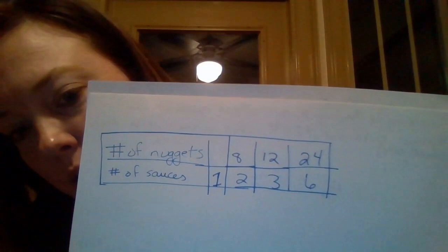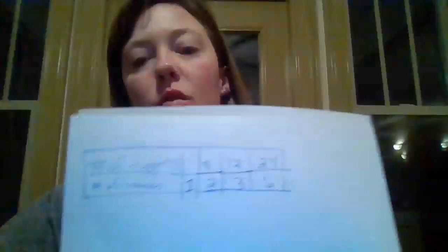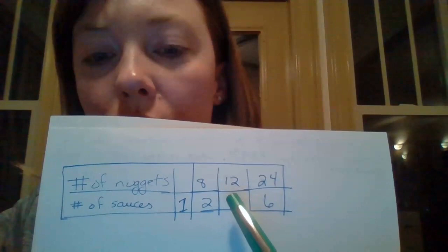One more way you may see unit rates is in a ratio table, which we talked about last week. If you've ever gotten chicken nuggets at fast food, restaurants give you a certain number of sauce packets per amount of nuggets. In this case, if you have 8 nuggets, they give you 2 packets; 12 nuggets, you get 3; and 24 nuggets, you get 6 packets. We want to know how many nuggets they give you per packet.